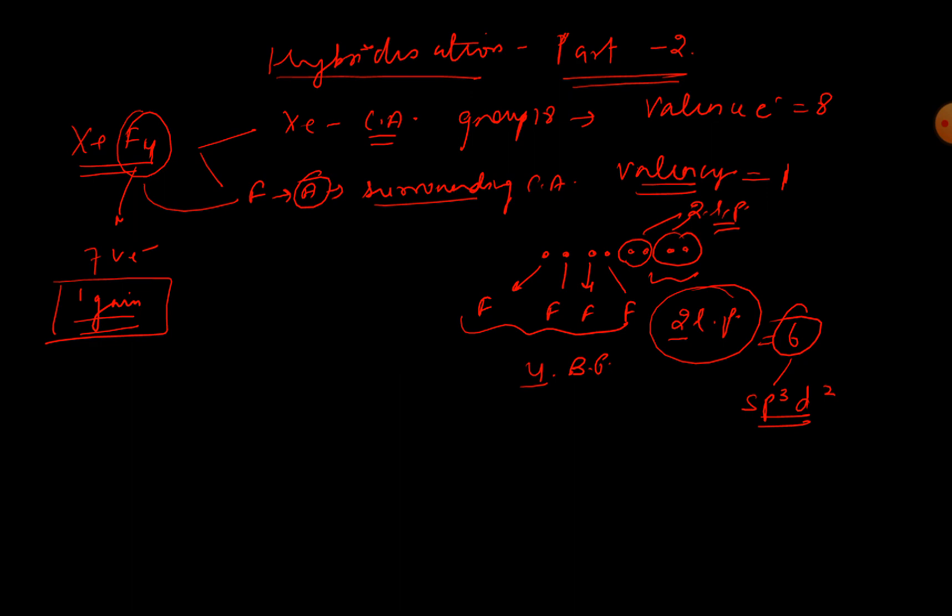In this case we are going to have distorted octahedral geometry. For sp3d2, the geometry is octahedral, but because we have got two lone pairs, lone pair-lone pair repulsion is more. Because of that, the geometry is going to distort and it is distorted octahedral.